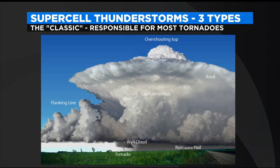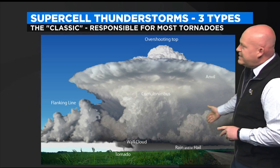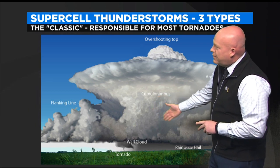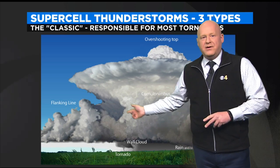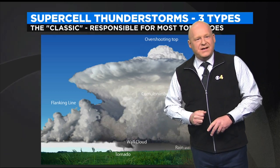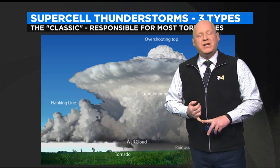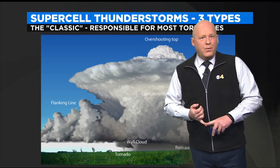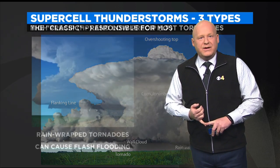There are three types of supercell thunderstorms, or severe thunderstorms. This one's the classic. It's the one that produces most tornadoes. It has a very defined downdraft here with the precipitation curtain near the ground. And then in the updraft, where there is no precipitation, that's where you would find a wall cloud or a tornado.